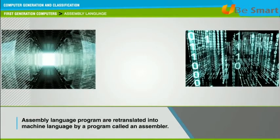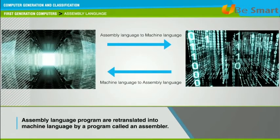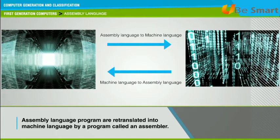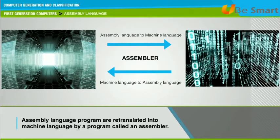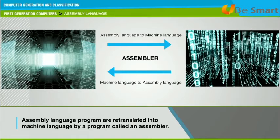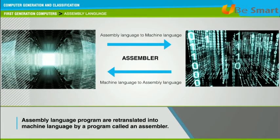Packages written in high-level programming languages are re-translated into assembly language or machine language by a compiler. Assembly language programs are re-translated into machine language by a program called an assembler. Every CPU has its own machine language; therefore, programs must be re-written or re-compiled to run on different types of computers.